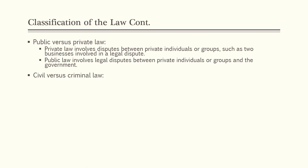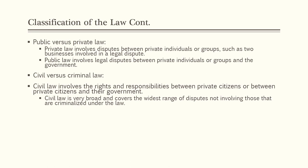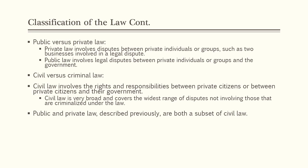The next broad classification is civil versus criminal law — generally if something isn't criminal, it's going to be civil. Civil law involves the rights and responsibilities between private citizens or between private citizens and their government. It covers the widest range of disputes not involving those criminalized under the law. Public and private law are both subsets of civil law. A contract dispute between two companies would be classified as both private and civil law, while a dispute by ranchers over water rights leases on federal land would be both public law and civil law.